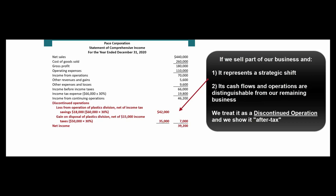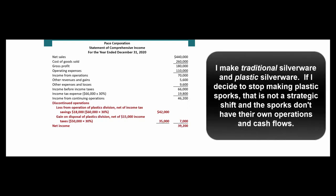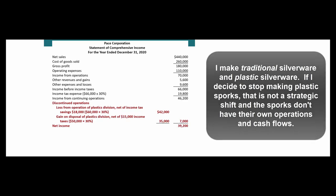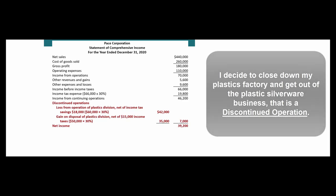Let's say I'm in the silverware business — I make traditional silverware and plastic silverware. If I decide within my plastics operation to stop making sporks, that really isn't a strategic shift; I probably can't separate the operations and cash flows from the sporks from the forks, knives, and spoons. But if I decide to get out of the plastic silverware business altogether and just sell traditional silverware, that would be a strategic shift and that business would have separate cash flows and operations.